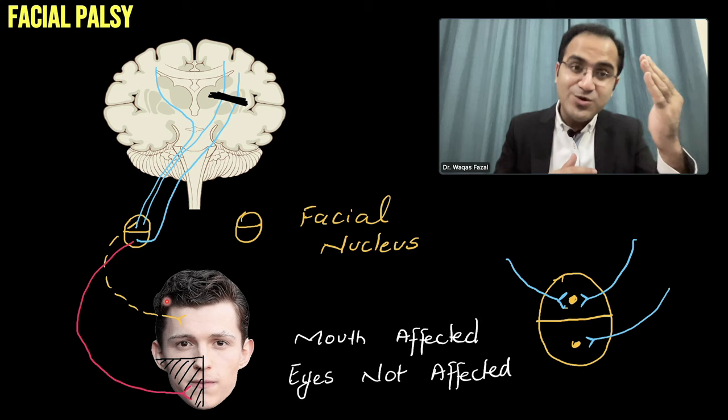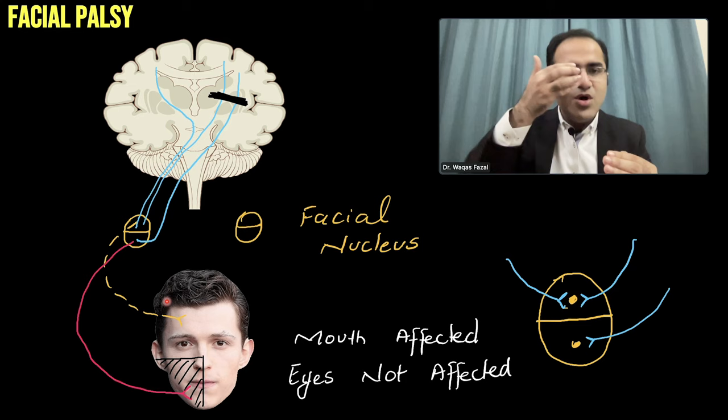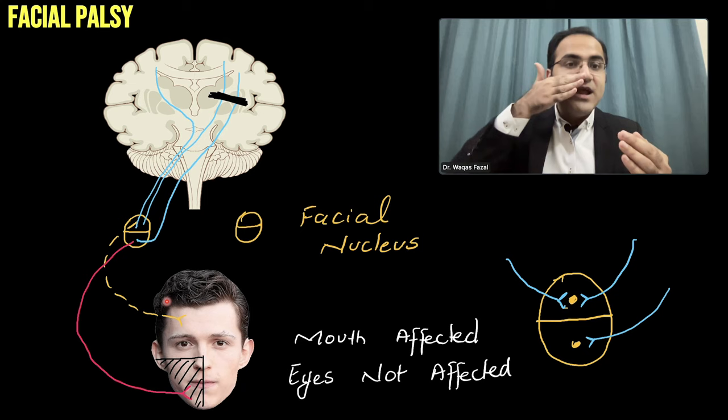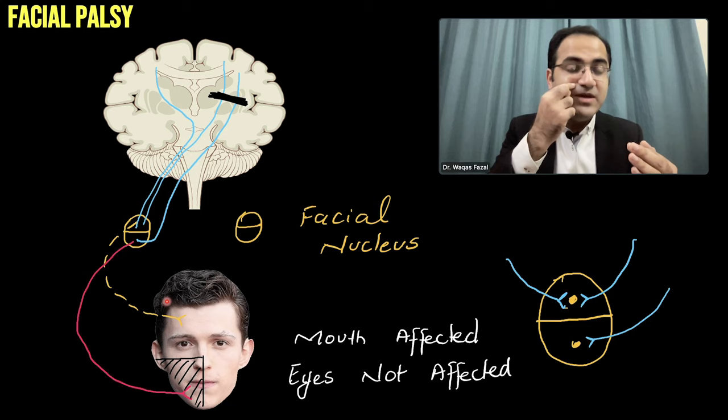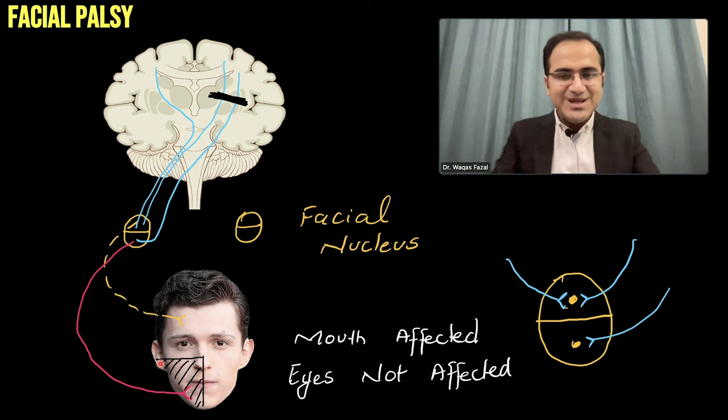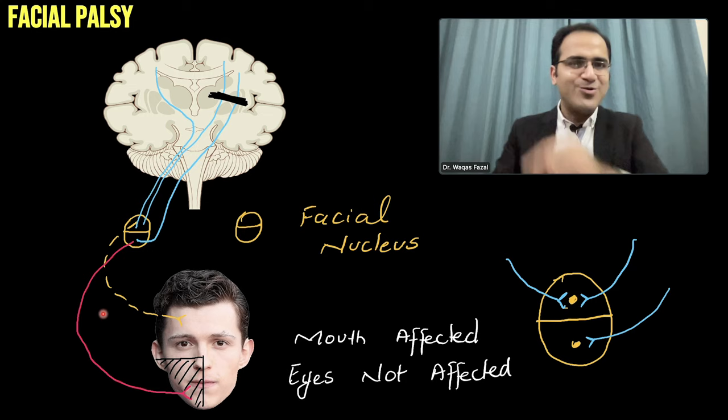In patients with upper motor neuron lesion, you would see normal forehead and normal eye — their eyelid won't be drooping. But the lower half of the face will be affected: there will be drooping of the face and absence of nasolabial fold, while the eye and forehead are spared. Only the lower part of the face is affected.